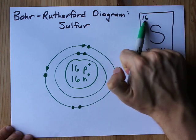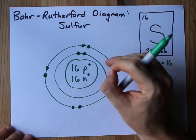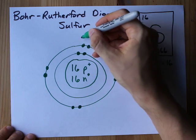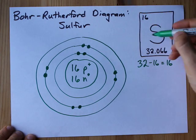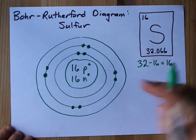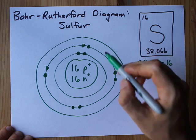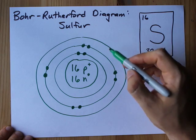But I need 16, I need six more. I can fit up to eight in my third shell. As long as your atomic number is 20 or less, the rule is up to eight electrons in that third shell.